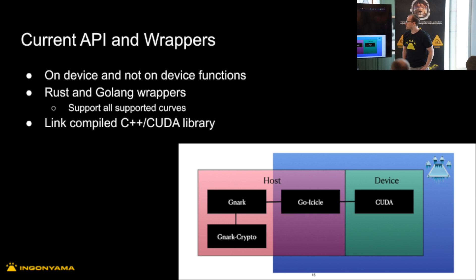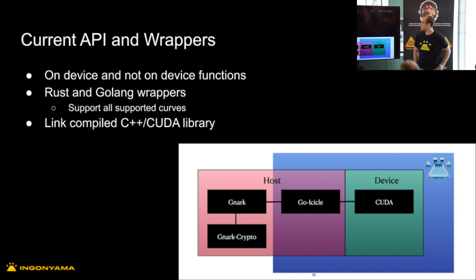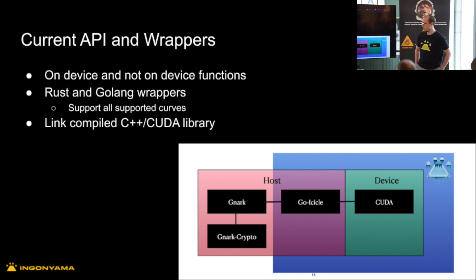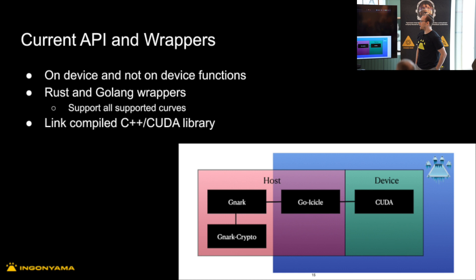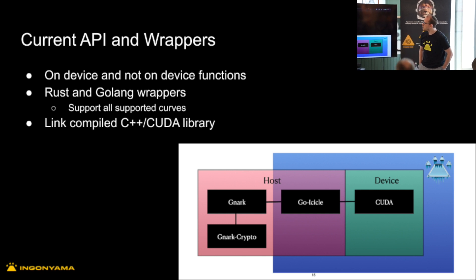So current APIs and wrappers. The first thing is we have many functions that we're doing to facilitate zero knowledge proofs on GPU. So we have MSM, NTT, INTT, ECNTT, and some vector and matrix multiplication and addition and subtraction.